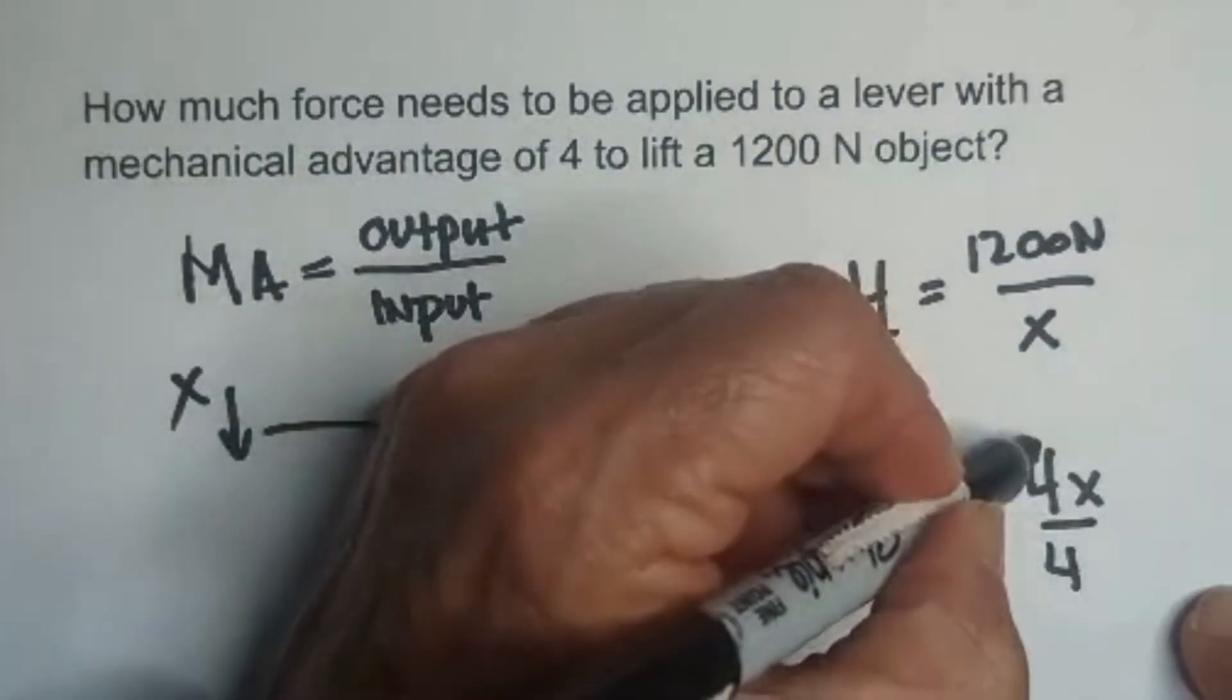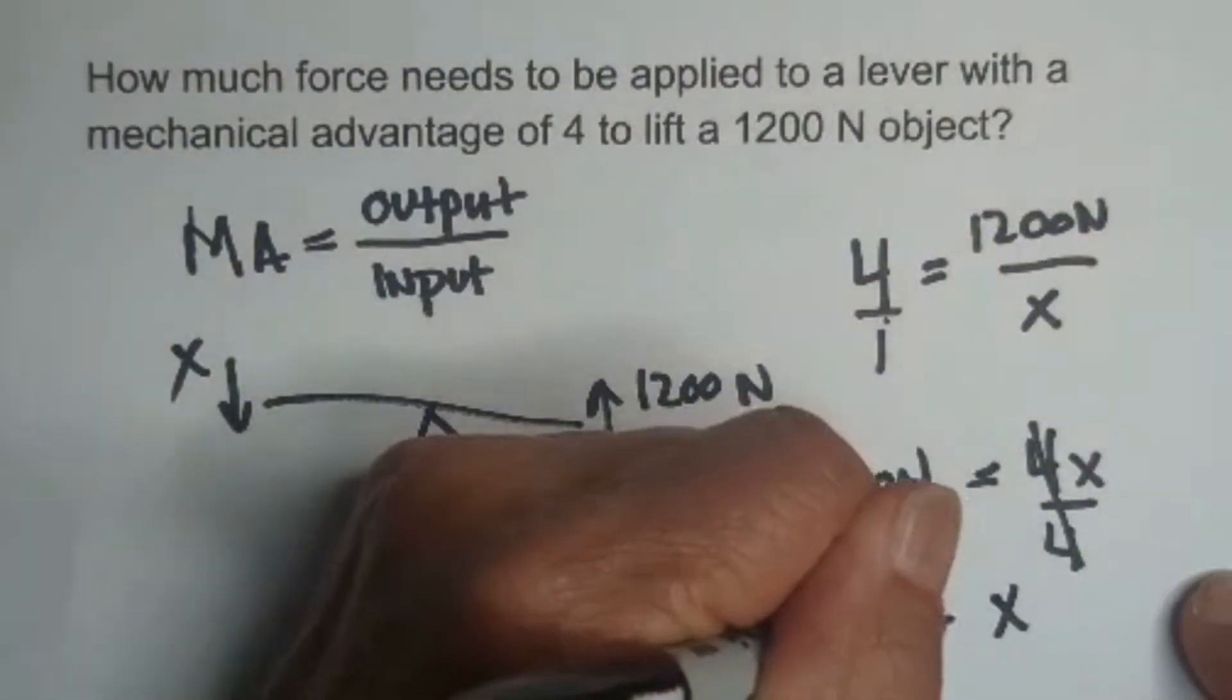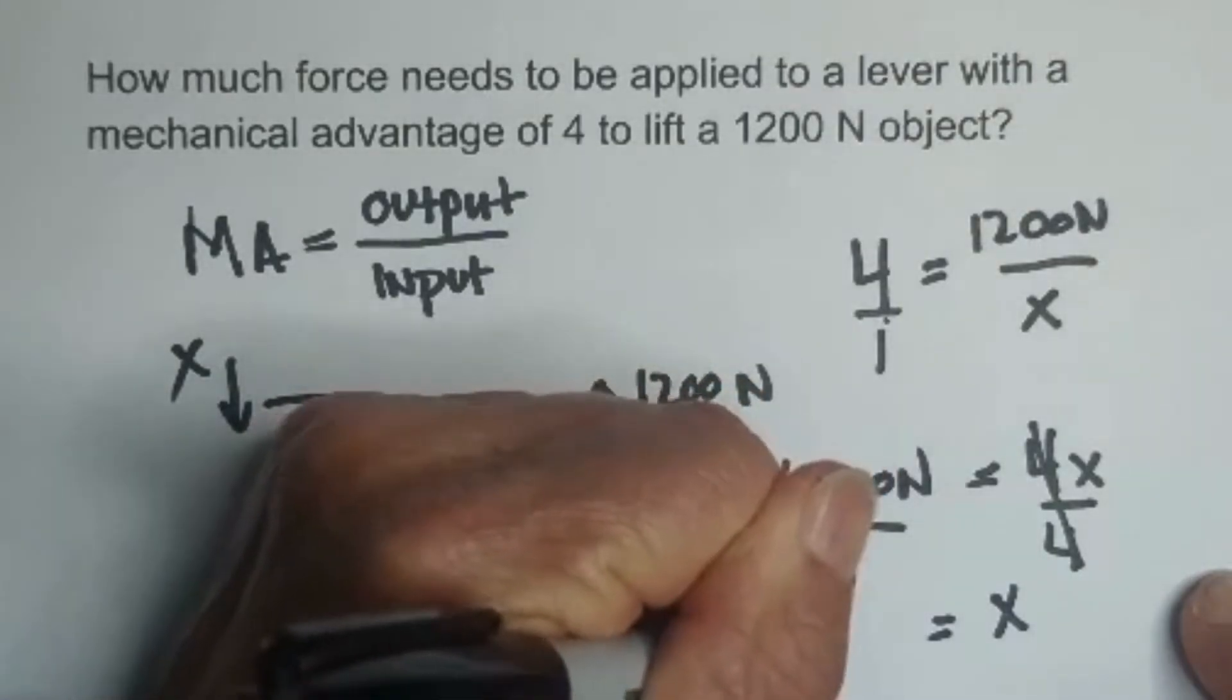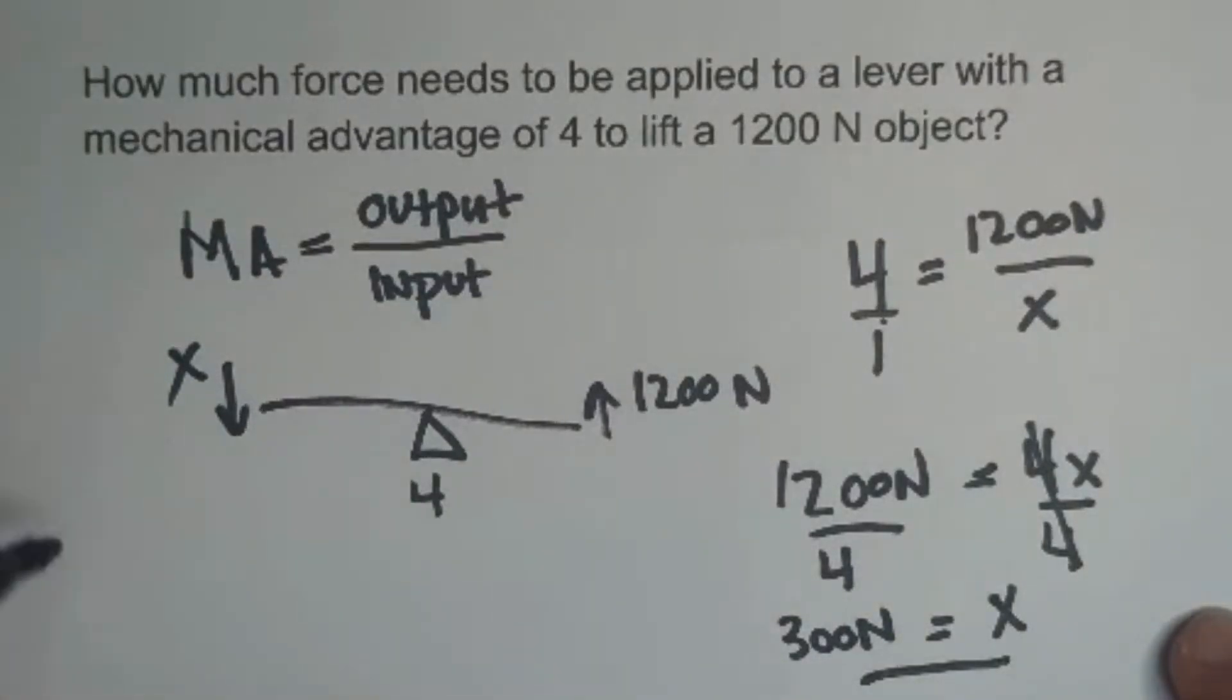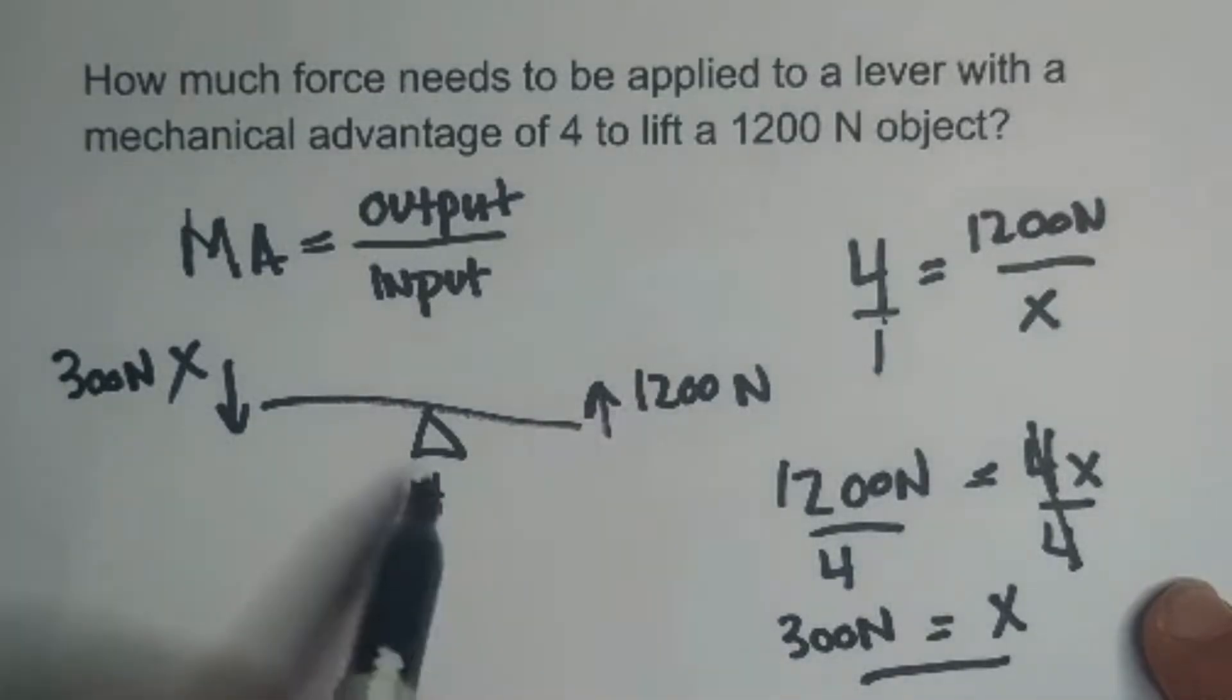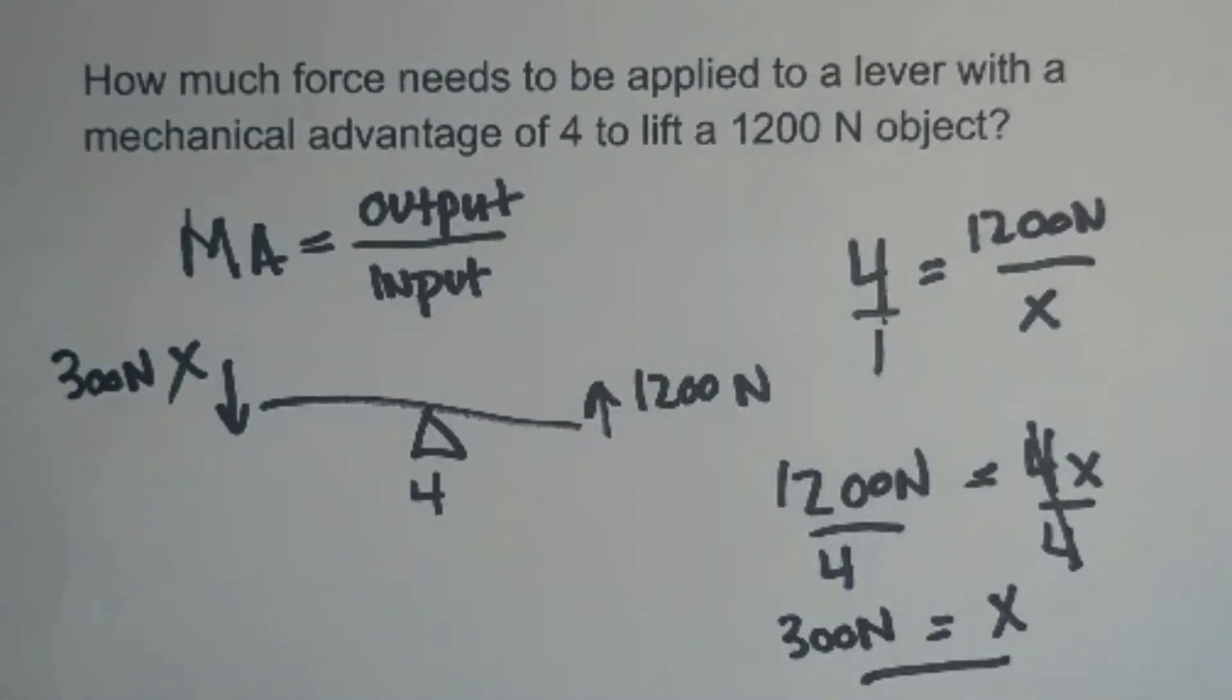These cancel. So x is going to equal 1200 divided by 4 is 300, and remember your unit of measure, which is newtons. So we have to apply 300 newtons here with a mechanical advantage of 4 to lift an object 1200 newtons.